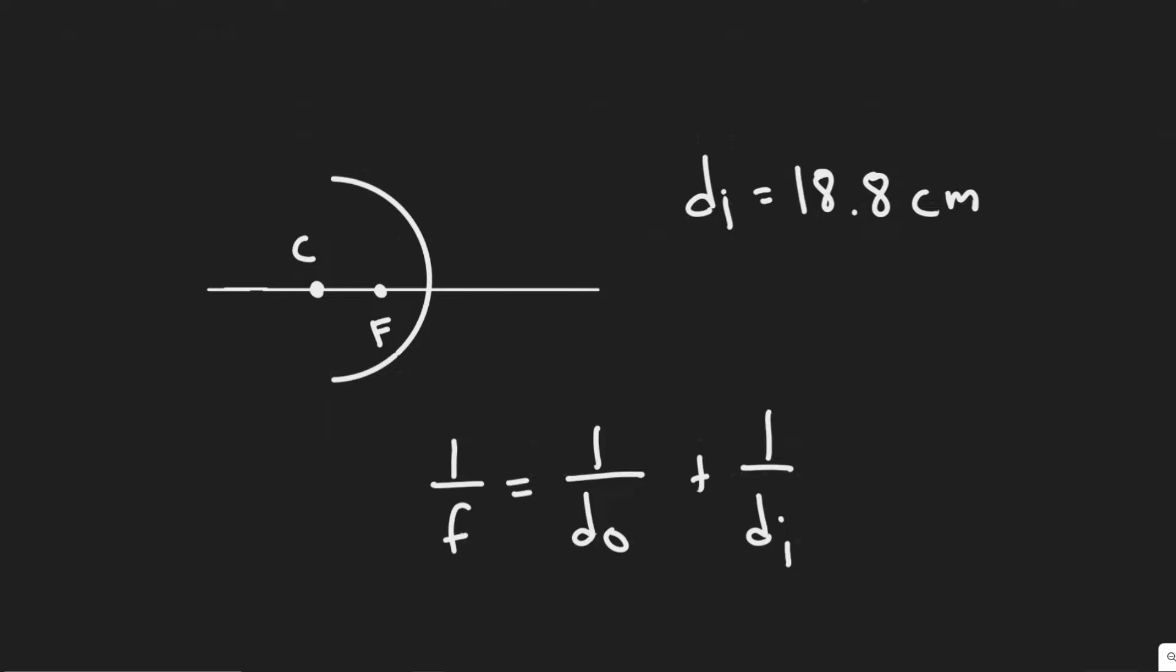Okay, so in this problem we're told a solar cooker, really a concave mirror pointed at the sun, focuses the sun's rays 18.8 centimeters in front of the mirror. What is the radius of the spherical surface from which the mirror was made?